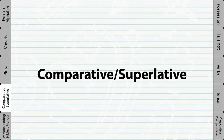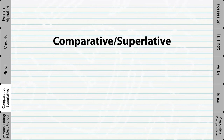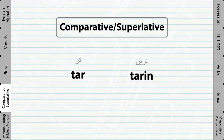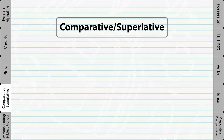Comparative and superlative. By simply adding TAR at the end of a word, we make the adjective comparative. And by adding TARIN at the end of the word, we make the adjective superlative.